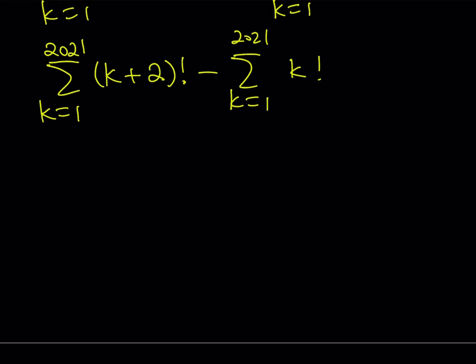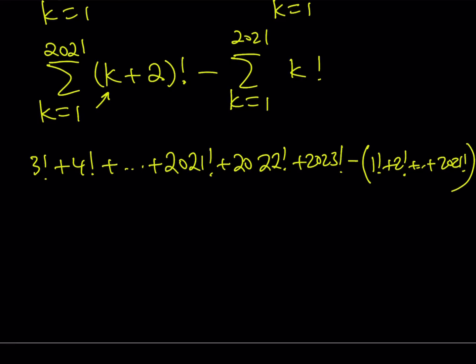If you expand the first one, you're going to start off with 3 factorial. Remember, you're going to replace k with 1, but that's 1 plus 2. So that's 3 factorial. Then we get 4 factorial, dot dot dot. But it's going to end up with 2023 factorial, but we only have 2021. The last one is going to be 2023 factorial. And then from this, I'm supposed to subtract 1 factorial, 2 factorial, dot dot dot, all the way up to 2021 factorial.